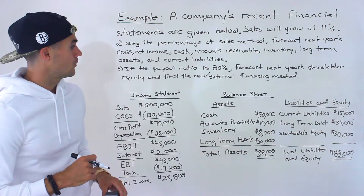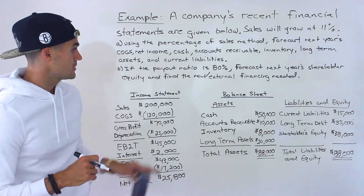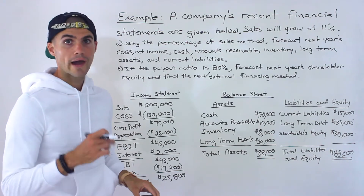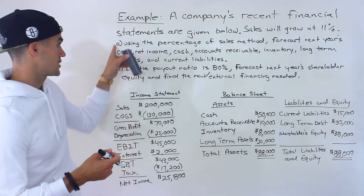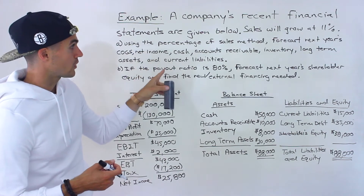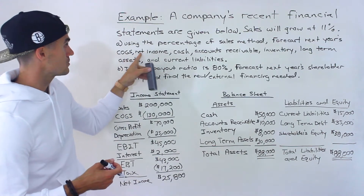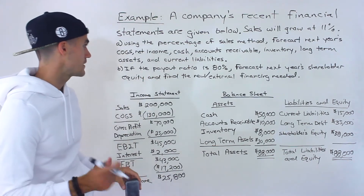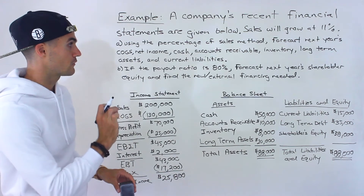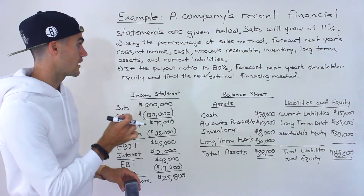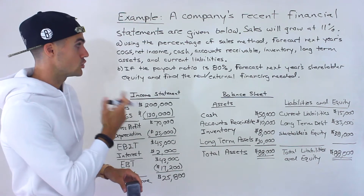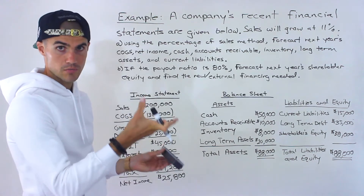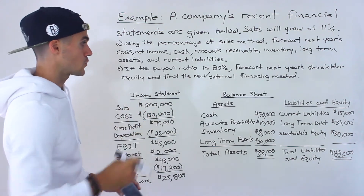What we're given here is a company's recent financial statements — we have the income statement and the balance sheet. We're also told sales are going to grow at 11%. There are two questions: Part A, using the percentage of sales method, we have to forecast next year's cost of goods sold, net income, cash, accounts receivable, inventory, long-term assets, and current liabilities. Part B, if the payout ratio is 80%, we have to forecast next year's shareholders' equity and find the external financing needed — new financing needed and external financing needed mean the same thing.